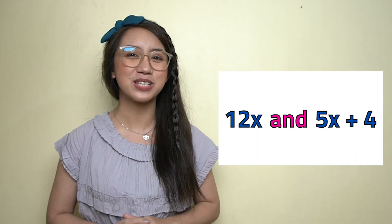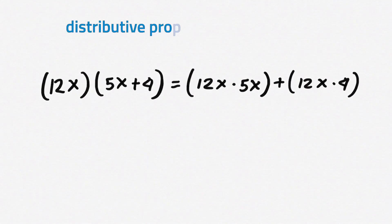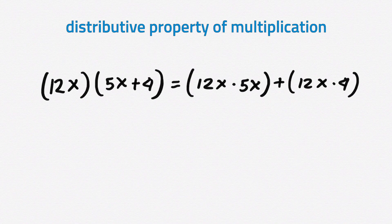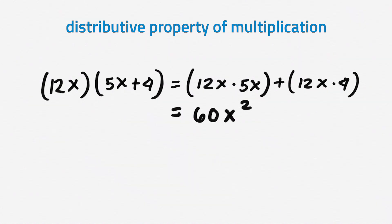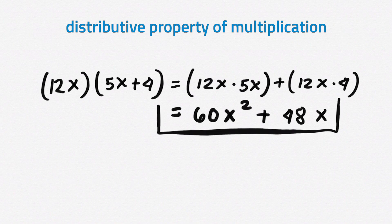How about multiplying a polynomial by a monomial? Multiplying a polynomial by a monomial involves repeated use of the distributive property and the rules for multiplying monomials. Likewise, other laws of exponents are to be used. Now, let's solve for the product of 12x and 5x plus 4. We will use the distributive property of multiplication to rearrange the factors. 12x times 5x equals 60x squared. 12x times 4 is equal to 48x. Therefore, the final answer is 60x squared plus 48x.